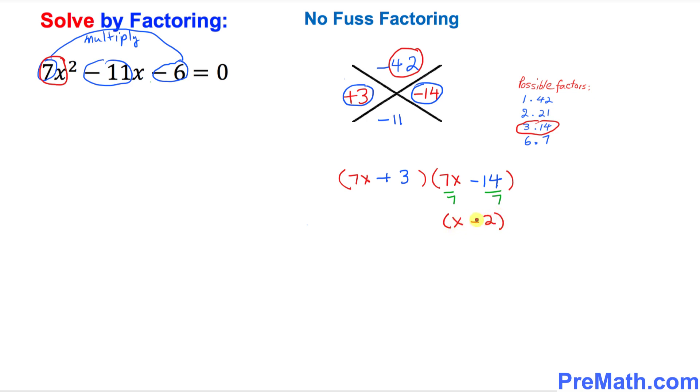So this 7 and 7 cancels out. So we got this one is going to become x minus 2. We no longer have anything in common. So also I want you to bring down this thing 7x plus 3. So these are our factors for this given equation.